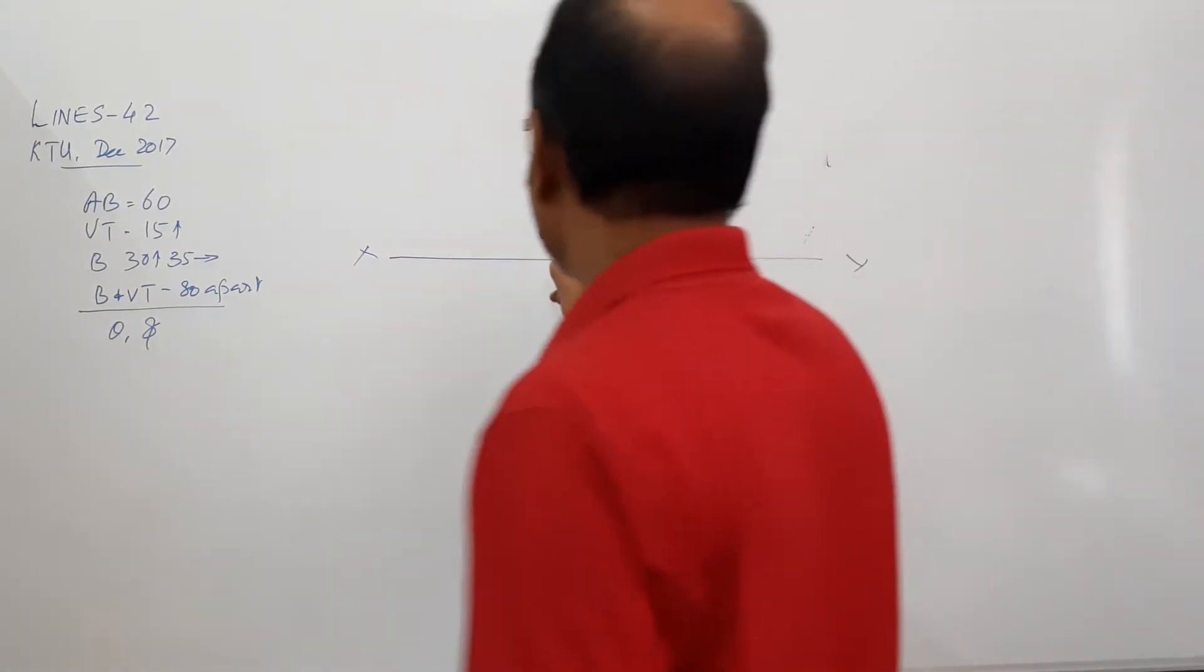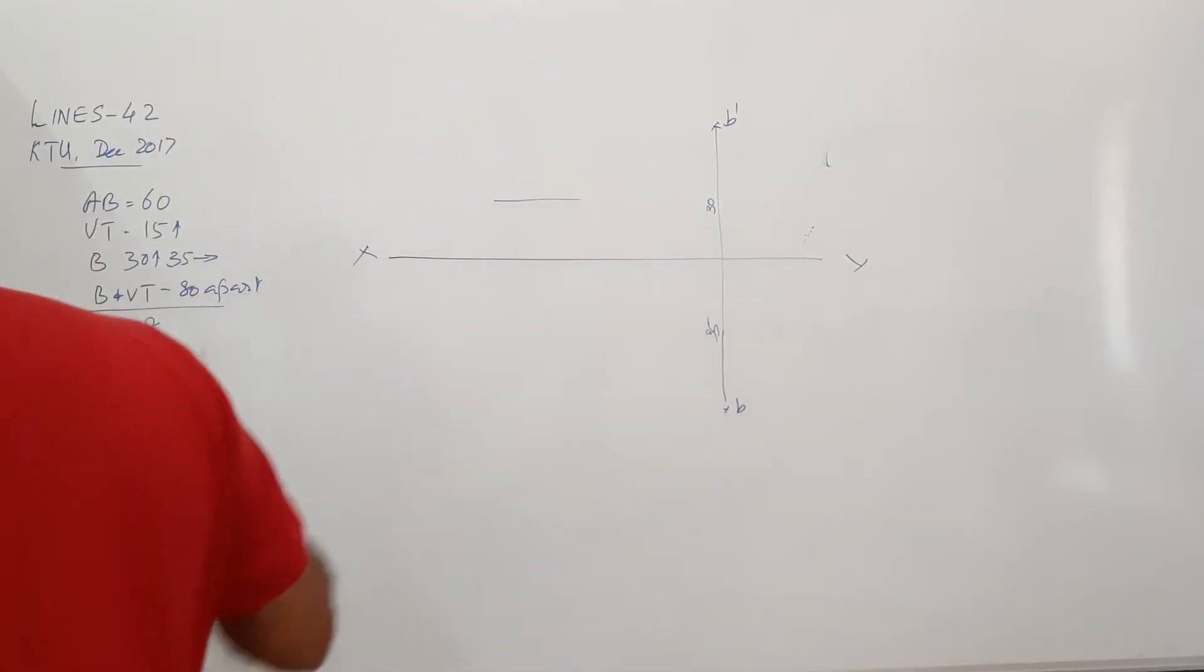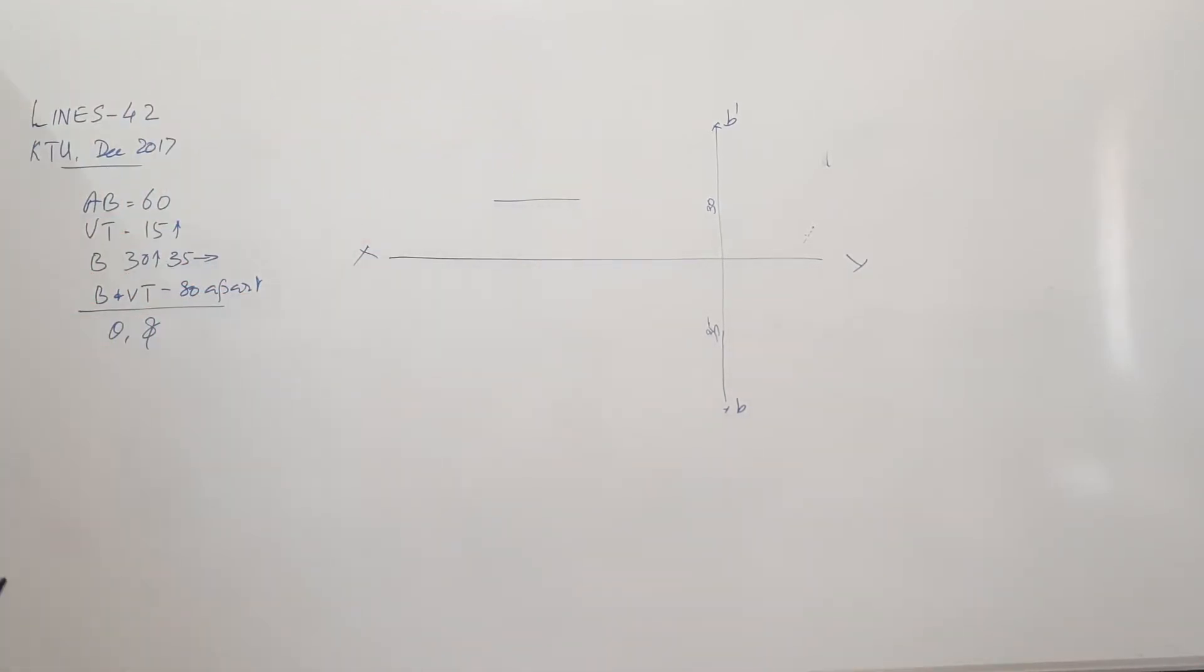VT is 15mm above, 15mm above HP. Draw the XY line, draw a horizontal line. This line will contain VT.